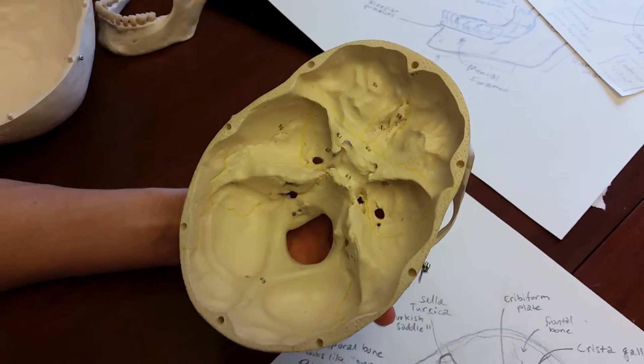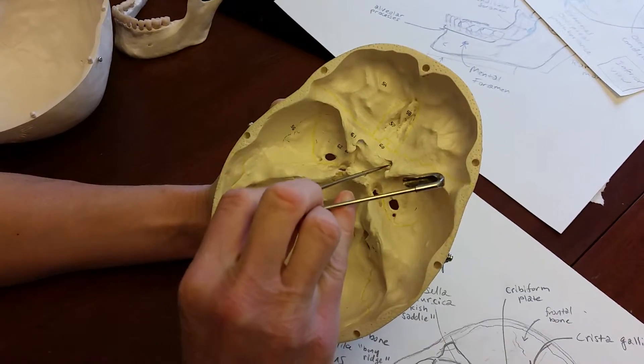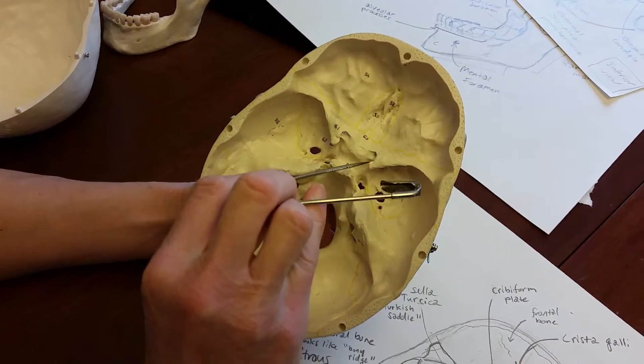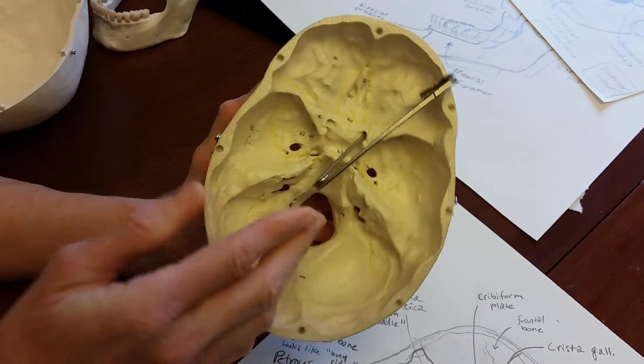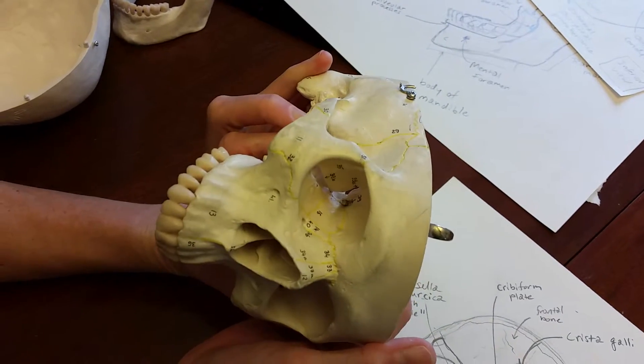Now, between the lesser wing and the Turkish saddle, we can see what we call the optic canal. This is where the optic nerve comes through. If you look, you can see where it goes.